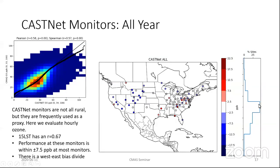If we look at all the sites as a percentage of whether they're high biased or low biased, there are more sites in the CASNAP database that are unbiased — between negative 2.5 ppb and 2.5 ppb bias — with a tail that is lower bias from 2.5 to 12.7. This is pretty good performance for a whole-year hourly evaluation.